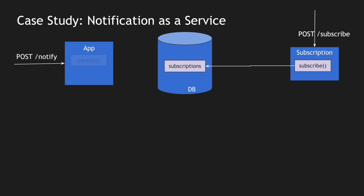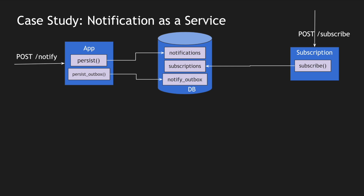On the other hand, we have a notification service with a notify endpoint. When someone calls this endpoint, it adds an entry into the notification table and also persists a mapping into the notify outbox table. This notify outbox table is where we pick messages from to notify our subscribers.